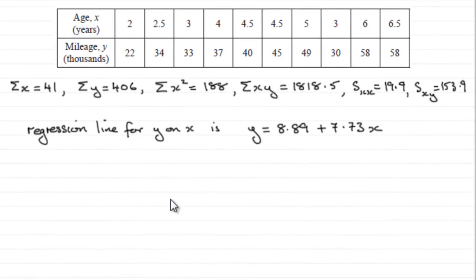Now to give an interpretation to the B value in the regression line that we've just found, B being the 7.73, what I would suggest we do is just have a look back at the scatter diagram or the regression line.